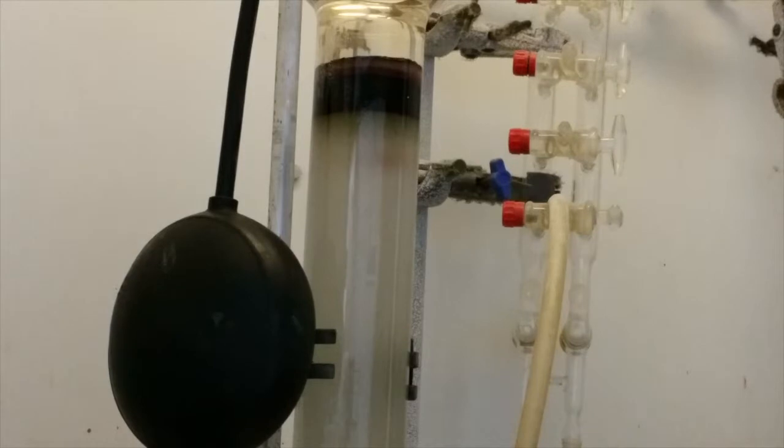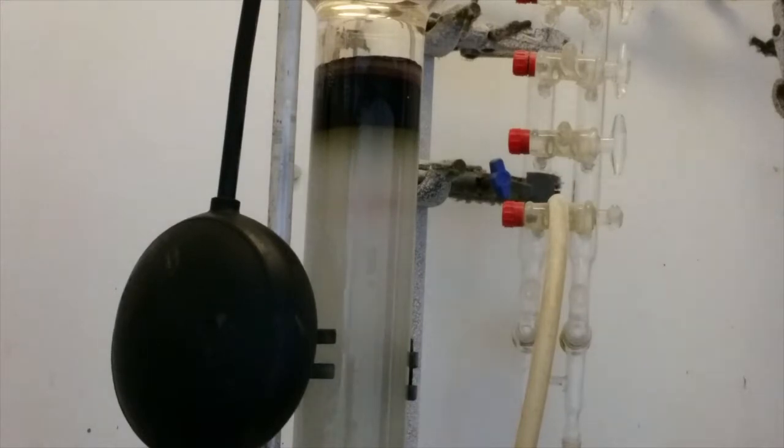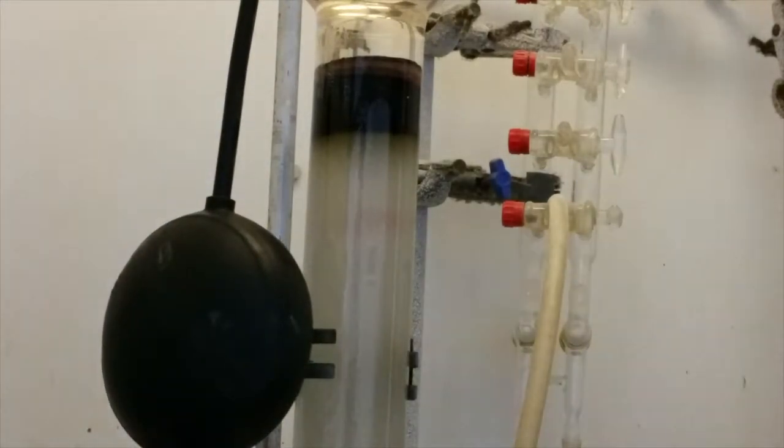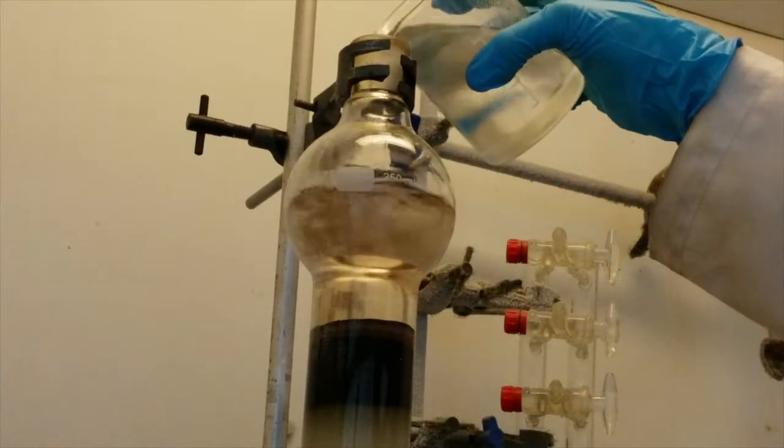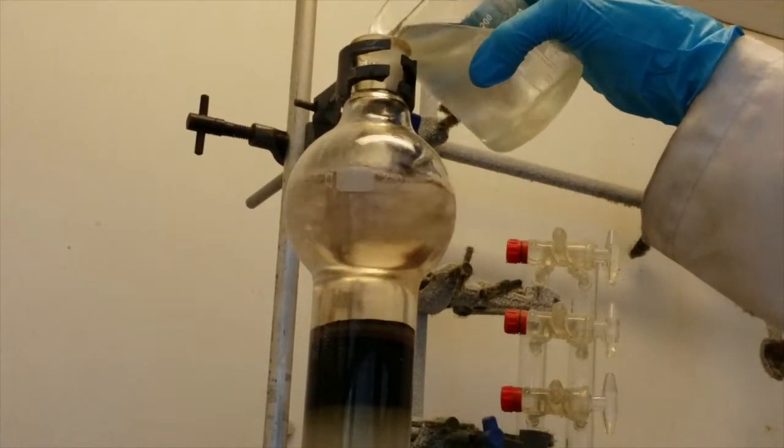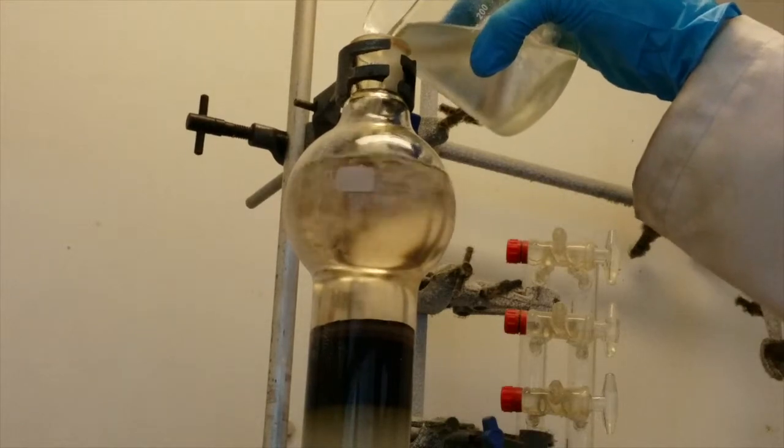Over time the product will move down the column hopefully separating into one or more bands. You can ascertain which is the product which you would like to collect by comparing this to a TLC you have run of the product earlier. During the column continue to keep your reservoir filled with solvent and do not allow your silica to dry out at any time.